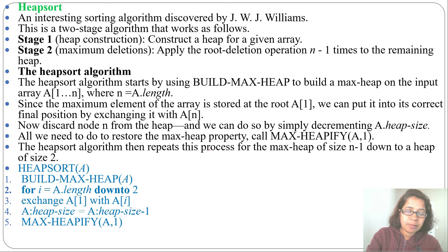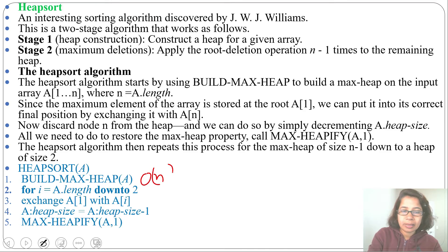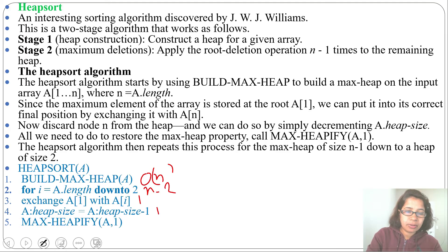Let's analyze the time complexity. The buildMaxHeap procedure runs in O(n) time. Then for i from A.length down to 2 — let A.length equal n — the exchange of A[1] with A[i] is called once, heap size decrease is called once, and MaxHeapify has a running time of O(log n).